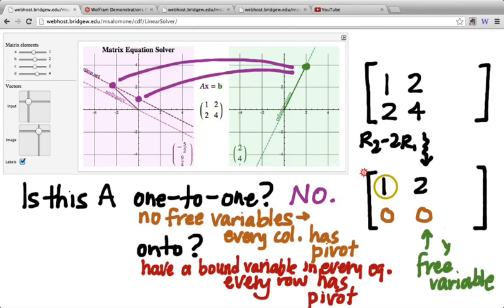And so every row has to have a pivot. So looking at our linear transformation here, our matrix 1, 2, 2, 4, is it onto? No. Because in order to be onto, we would have needed a pivot in this third row. Looking at it from a transformation perspective, it's not onto.